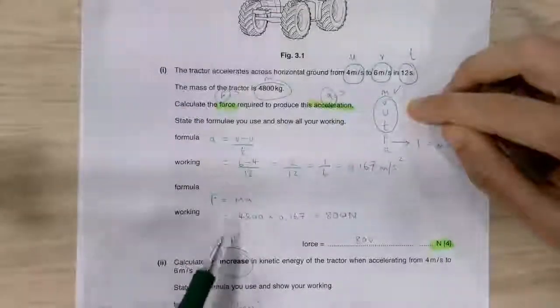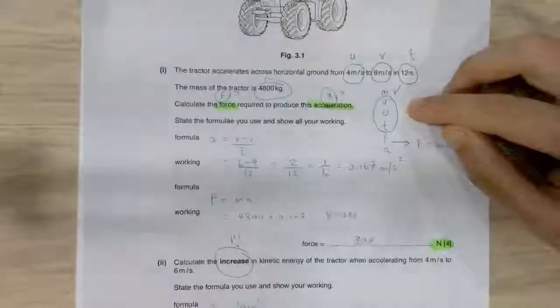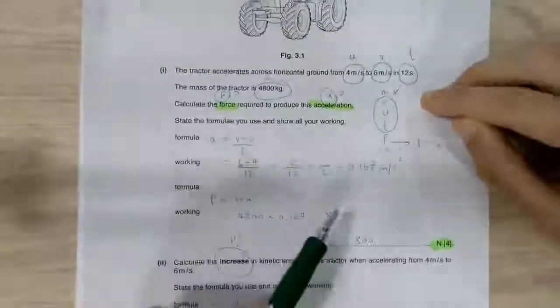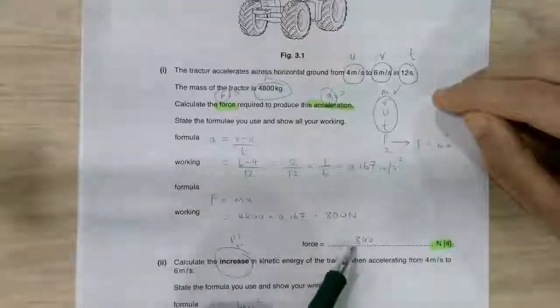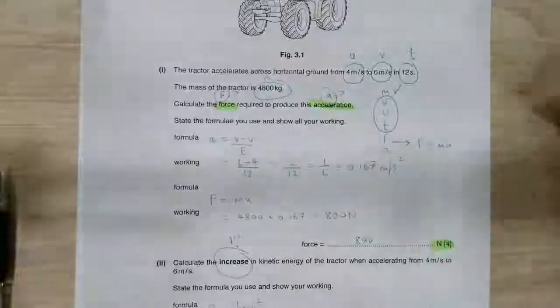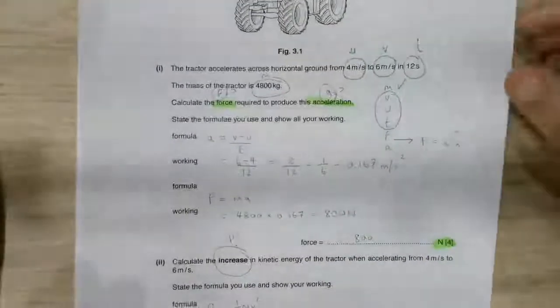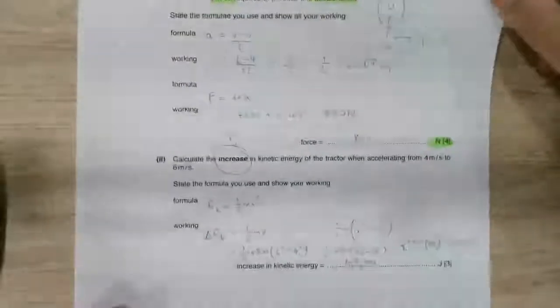And again, F equals M times A, 4800 times 0.167. Comes out with a nice comfortable 800 newtons. Here there's no need to worry about significant figures. You could call this 0.17 if you wanted. You would get a slightly different answer than 800. That would be fine as well. You wouldn't lose any marks.